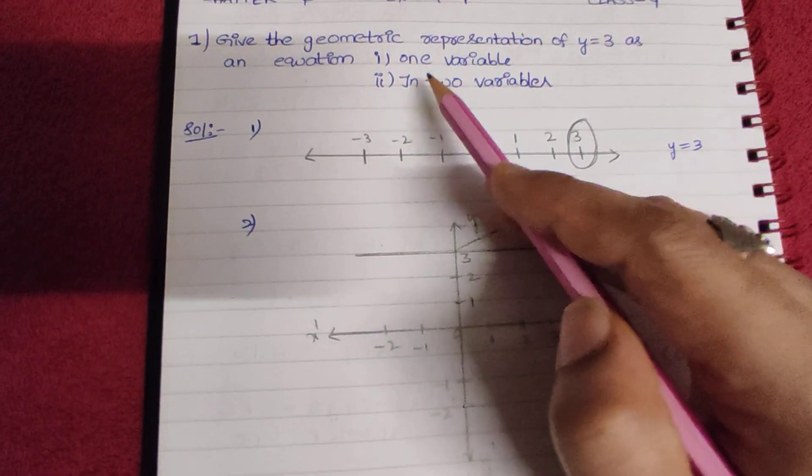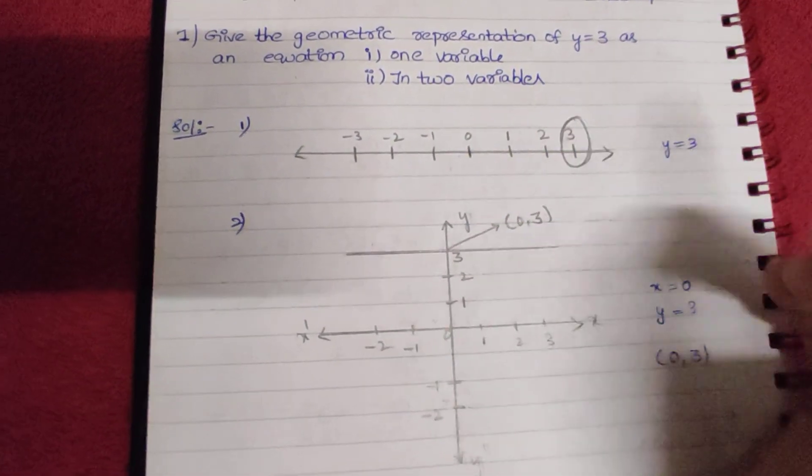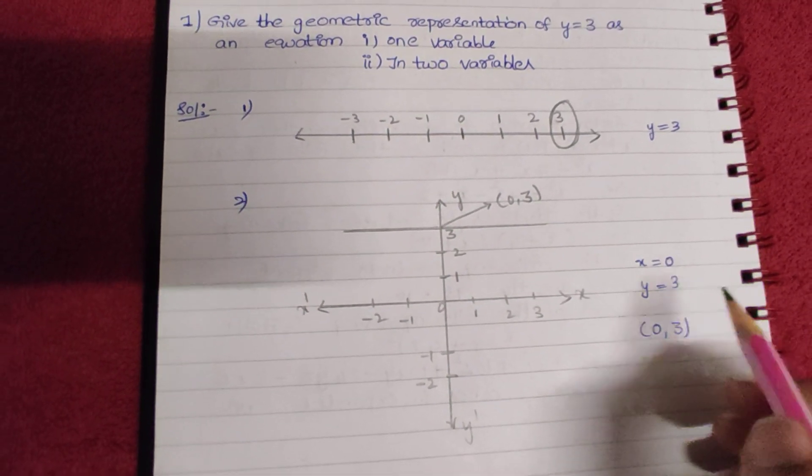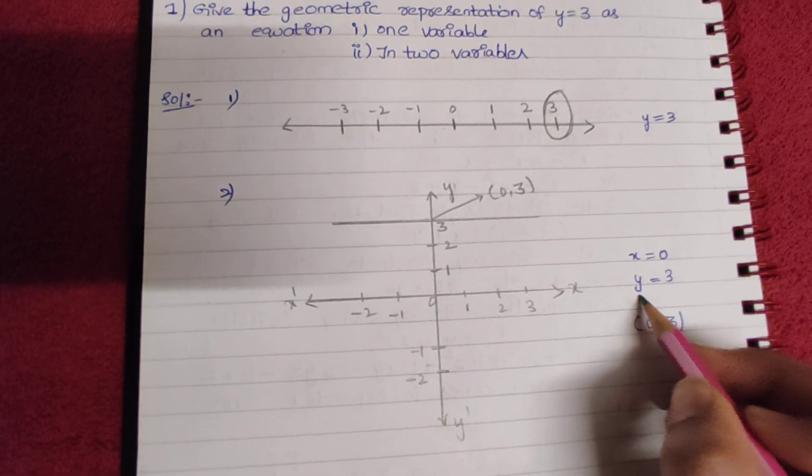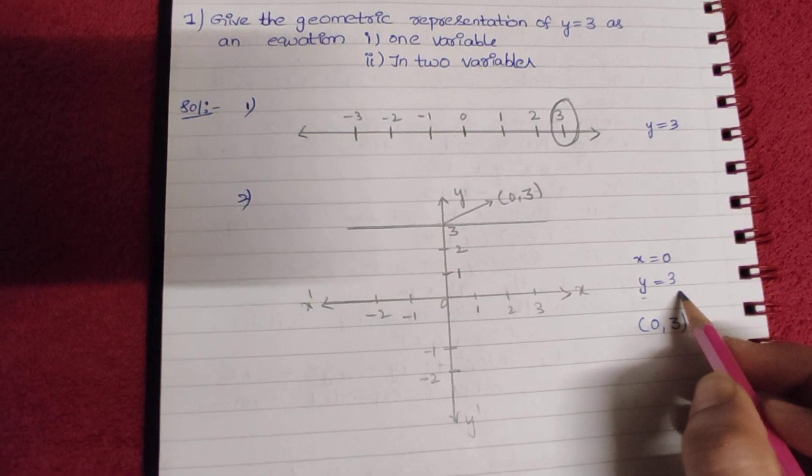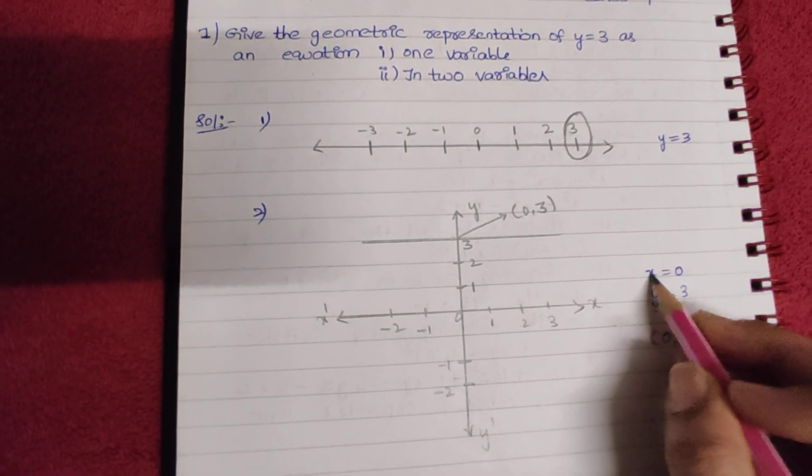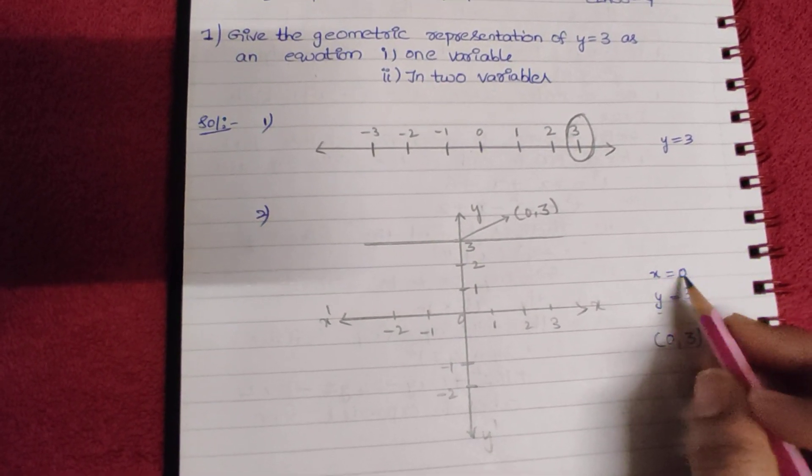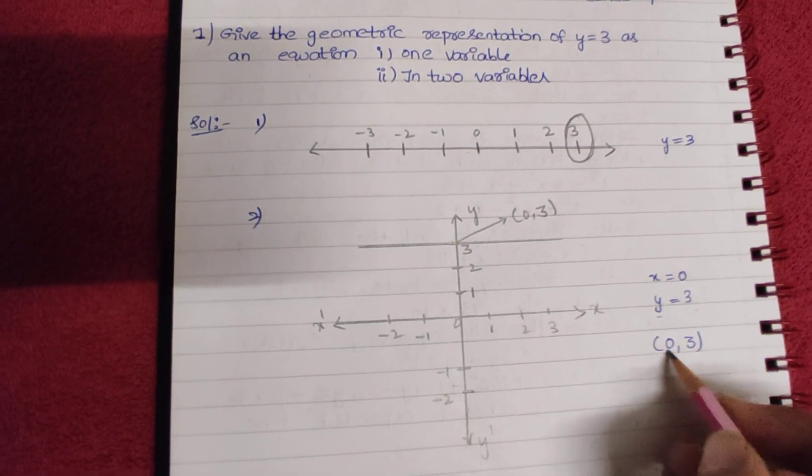Next, second question in two variables. So, in two variables means we need two variables. So, here y equals 3, you know, in question they given. We need here x equals 0, that's why I took here x equals 0, so the point is (0, 3).